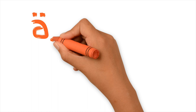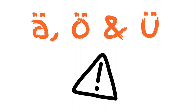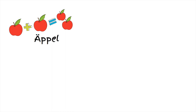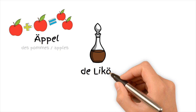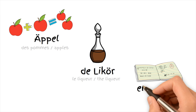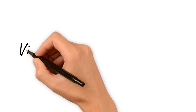Pay attention to the pronunciation of the following letters: Ä, Ö, and Ü. Ä — Äppel. Ö — de liker. Ü — eng ü-boong.